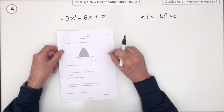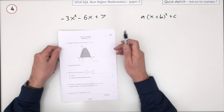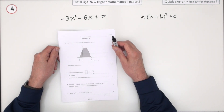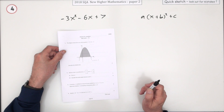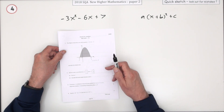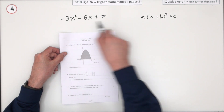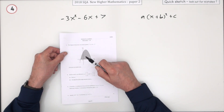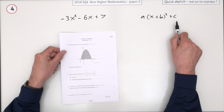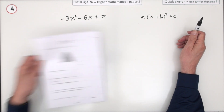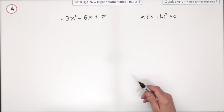Number four from Paper 2 of the 2018 Higher Maths — another 3-mark question, quite a quick one. Express this quadratic expression in this form; in other words, complete the square.